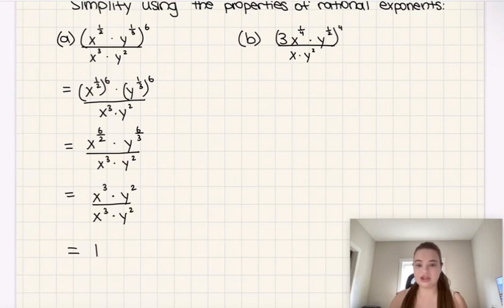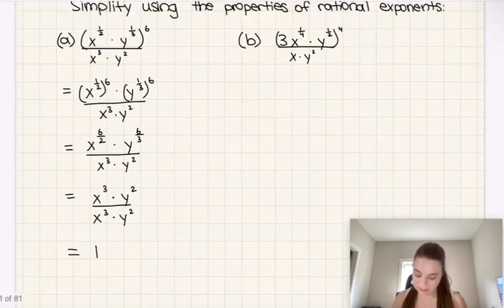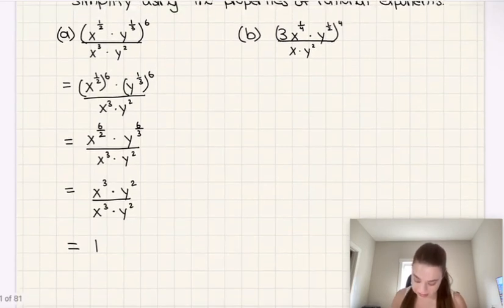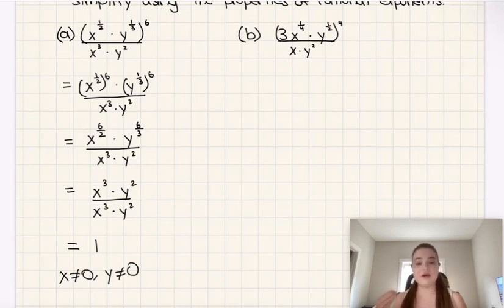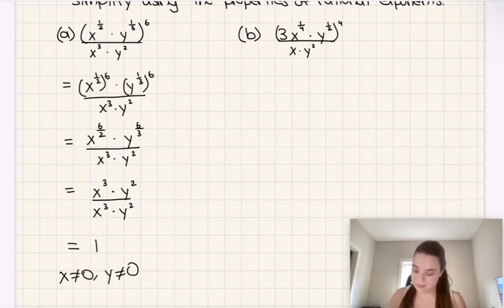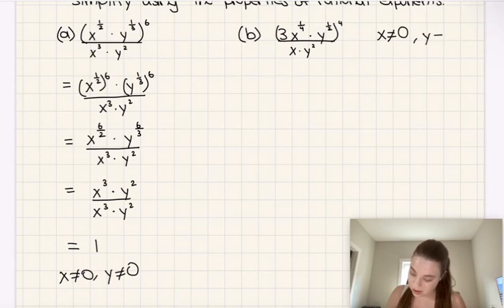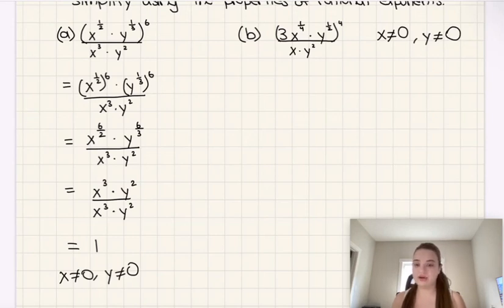We do have a couple of restrictions on the variables: x cannot equal zero and y cannot equal zero. If either one equals zero, the expression would be undefined rather than one, because we can never have zero in the denominator. The same restriction applies to expression B as well, since x and y squared both appear in the denominator there.